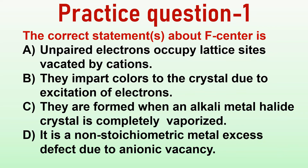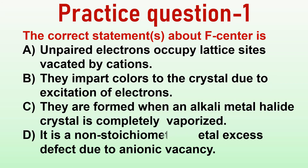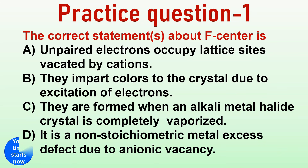Test your understanding by solving a few practice questions. Question one: which is the correct statement about F-centers? Option A: unpaired electrons occupy lattice sites vacated by cations. Option B: they impart colours to the crystal due to excitation of electrons. Option C: they are formed when an alkali metal halide crystal is completely vaporized. Option D: it is a non-stoichiometric metal excess defect due to anionic vacancy. Write your response in the comment section.